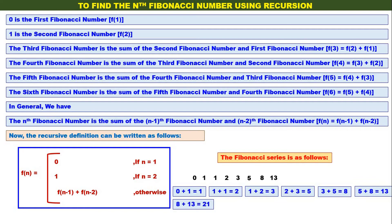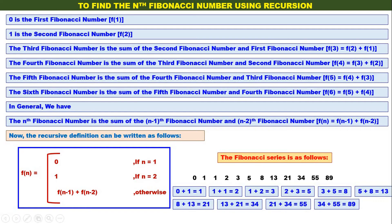Continuing: 8 plus 13 is 21, 13 plus 21 is 34, 21 plus 34 is 55, 34 plus 55 is 89, 55 plus 89 is 144. The Fibonacci series goes on infinitely like this.